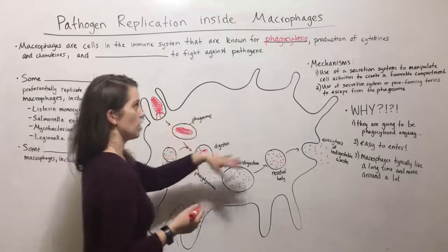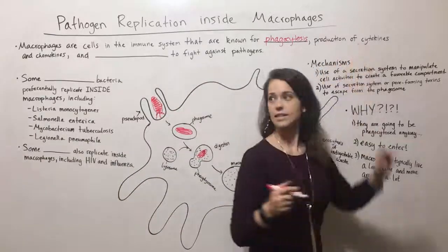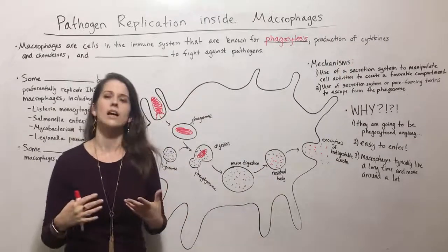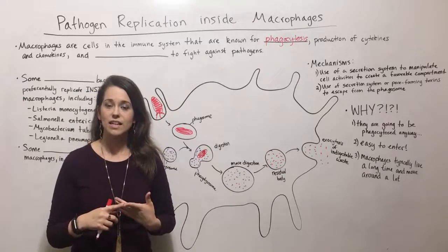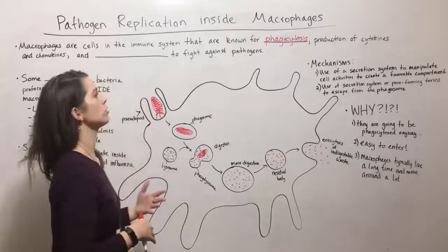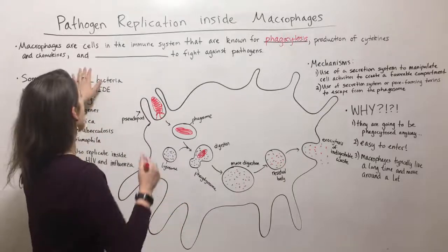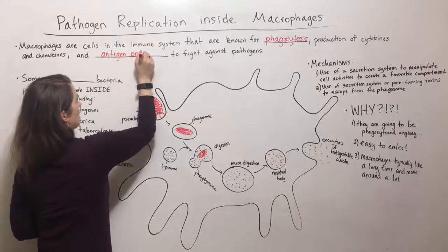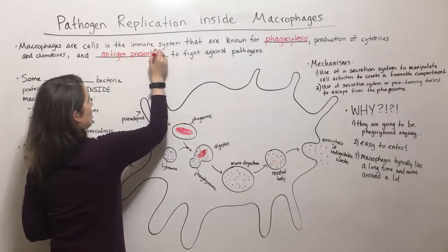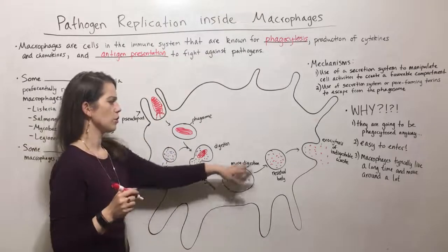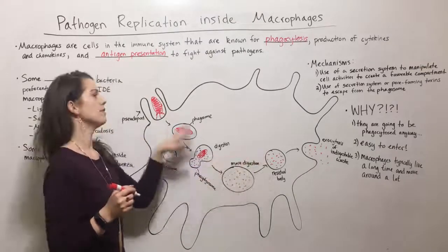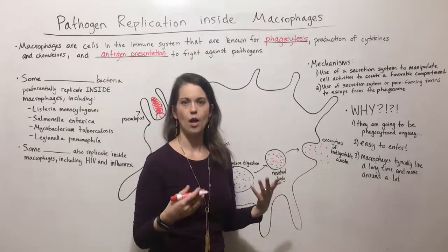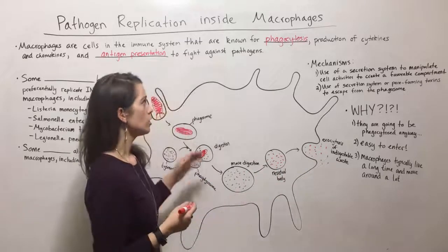Macrophages also produce cytokines and chemokines. These are basically just chemicals that cause various immune system cells to be activated or help them to get from one place to another. Macrophages also do a process called antigen presentation, which is where they take a few of the leftover bits of a chewed-up microbe and actually present them on the surface of the cell to help activate other immune system cells.